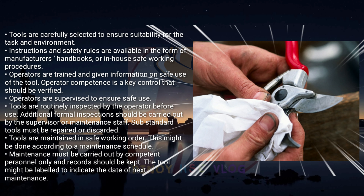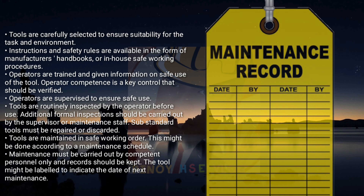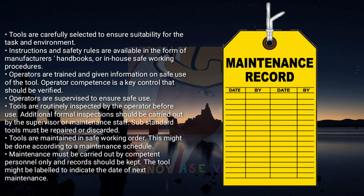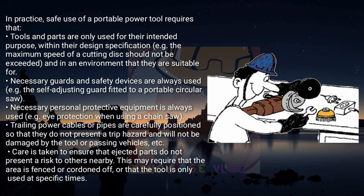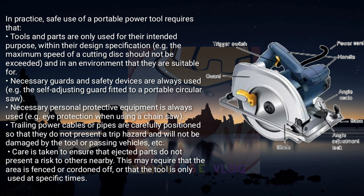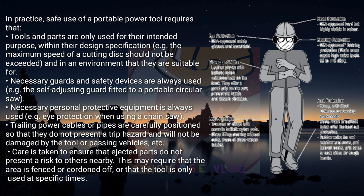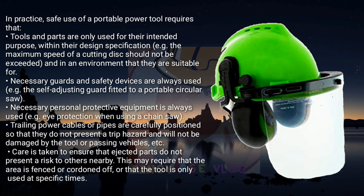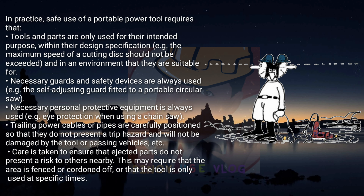Tools are maintained in safe working order, which might be done according to a maintenance schedule. Maintenance must be carried out by competent personnel only and records should be kept. The tool might be labelled to indicate the date of next maintenance. In practice, safe use of a portable power tool requires that tools and parts are only used for their intended purpose within their design specification – for example, the maximum speed of a cutting disc should not be exceeded – and in an environment that they are suitable for. Necessary guards and safety devices must always be used, for example the self-adjusting guard fitted to a portable circular saw. Necessary personal protective equipment must always be used, for example eye protection when using a chainsaw. Trailing power cables or pipes must be carefully positioned so that they do not present a trip hazard and will not be damaged by the tool or passing vehicles.